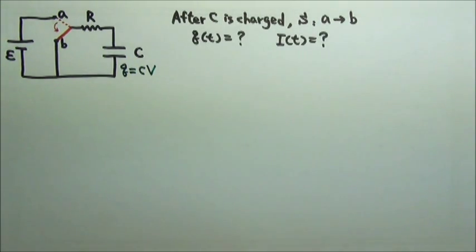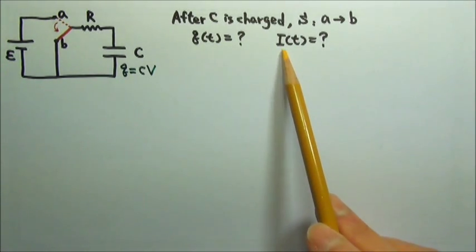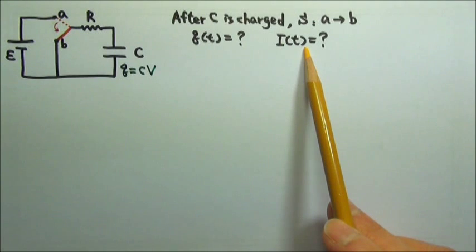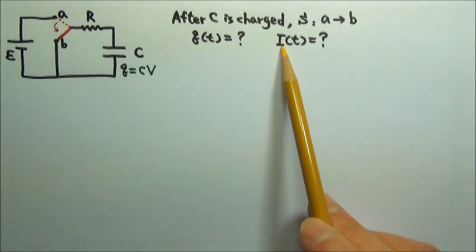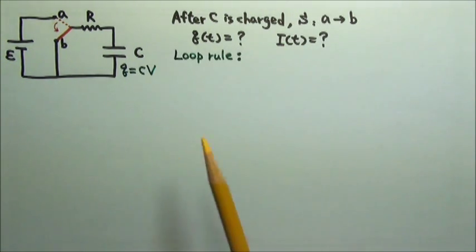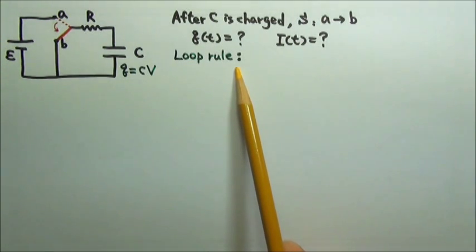During discharging, the charges on the plates would change according to time. The discharging current would also change according to time. In order to find Q and I as functions of time, we have to write a differential equation to solve. For circuits, we would start with the loop rule. Please see if you can write that differential equation.